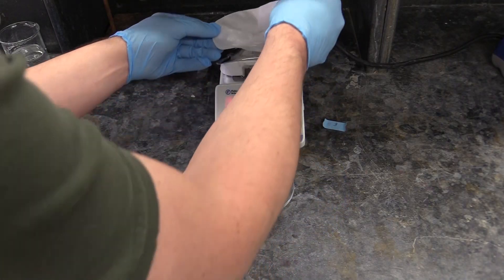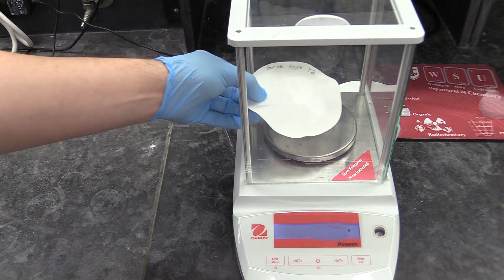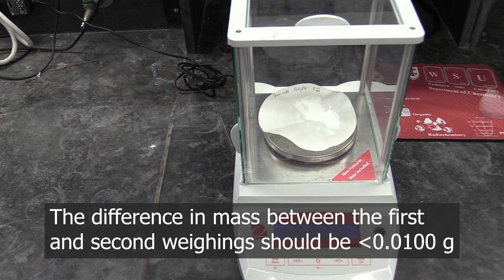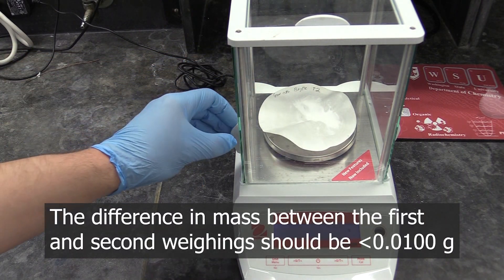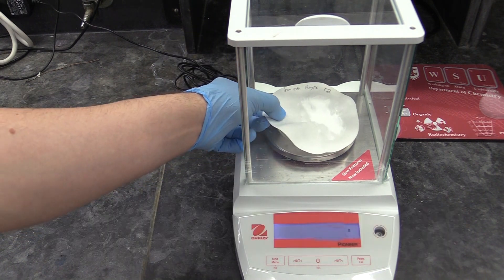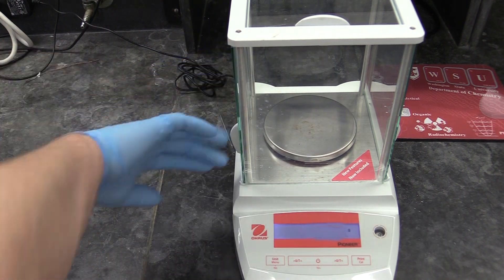After you've done that, put it back on the hot plate for a few minutes, then weigh it again. If the difference in mass between the first and second weighing is 0.01 grams or less, it's dry enough. If the difference is more than this, dry it some more, then check it again.